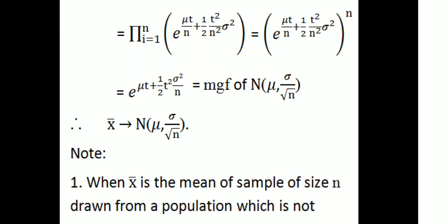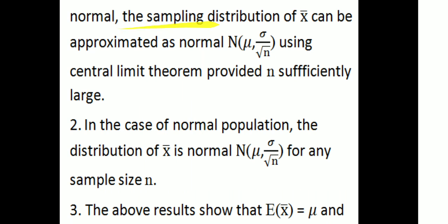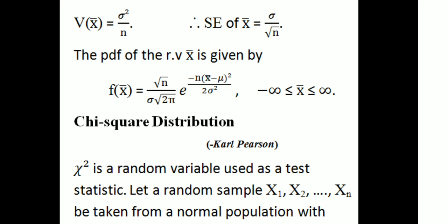The sample mean x-bar follows a normal distribution with parameters mu and sigma/root n. Notes: First, when x-bar is the mean of a sample of size n drawn from a population which is not normal, the sampling distribution of x-bar can be approximated as normal N(mu, sigma/root n) using the central limit theorem, provided n is sufficiently large. Second, in the case of a normal population, the distribution of x-bar is normal N(mu, sigma/root n) for any sample size n. Third, E(x-bar) = mu and Var(x-bar) = sigma²/n.